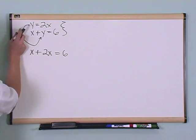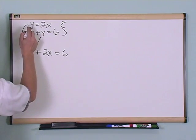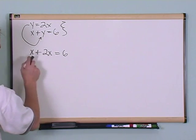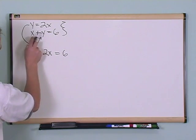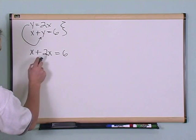I've got two equations. I've got one of them already solved for y. I take this y, which is equal to 2x, I put it in here, and this is what I get, x plus y, but in this case, y is equal to 2x, equals 6.